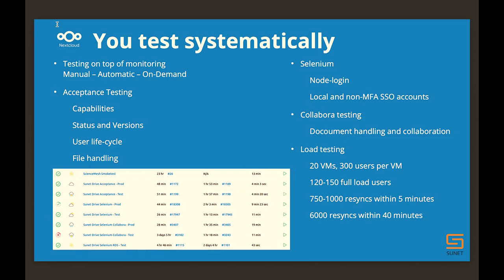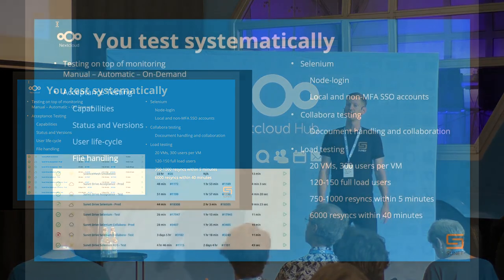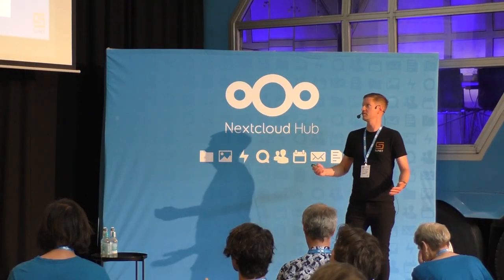If you're a small team, you write unit tests and acceptance tests just to see if things actually work. Once you have written your tests, you start testing systematically — that's the purpose of testing. You have manual testing, automatic testing, and on-demand testing. You start with acceptance testing: capabilities, stats, versions, users, lifecycle handling, file handling — you test for all of those. We do Selenium testing for login including two-factor authentication. Collaborator testing takes a lot of time but we do it all the time to make sure it works, and we occasionally do load testing — tested with up to 6,000 users.